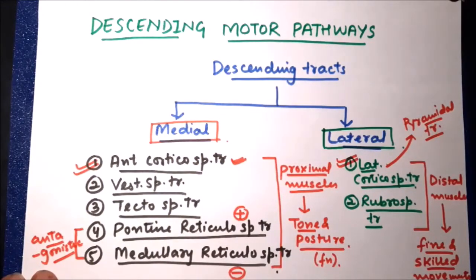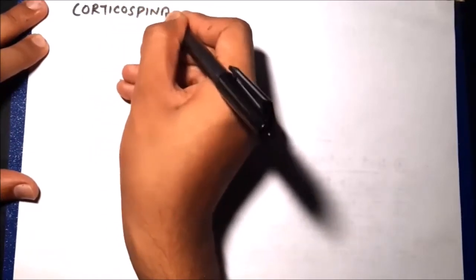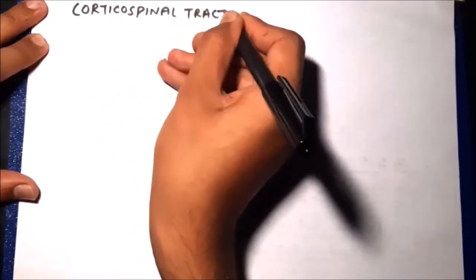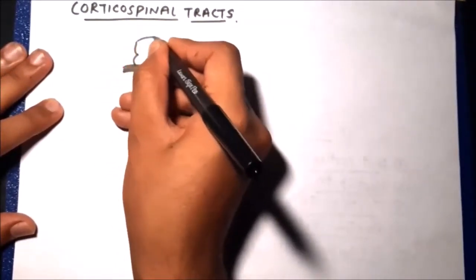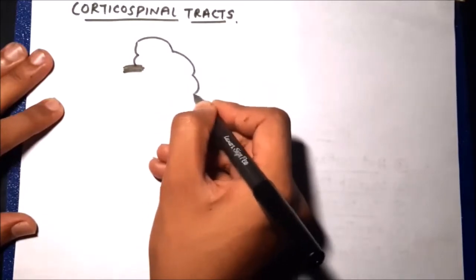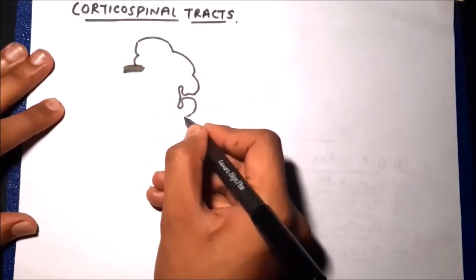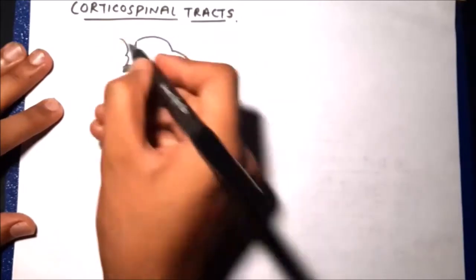Now let us discuss the corticospinal tract in detail, covering both the anterior corticospinal tract, which is a medial descending tract, and the lateral corticospinal tract, which is a lateral descending tract. Let us start by drawing a diagram showing a coronal section of the cerebrum with the lateral sulcus and cerebral cortex.